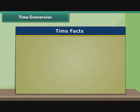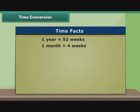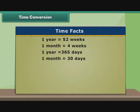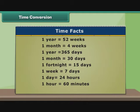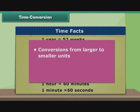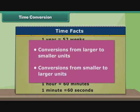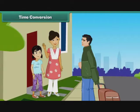Here are some facts about time. 1 year is equal to 52 weeks. 1 month is equal to 4 weeks. 1 year is equal to 365 days. 1 month is equal to 30 days. 1 fortnight is equal to 15 days. 1 week is equal to 7 days. 1 day is equal to 24 hours. 1 hour is equal to 60 minutes. 1 minute is equal to 60 seconds. Let us use these facts to perform conversions from larger to smaller units and from smaller to larger units.